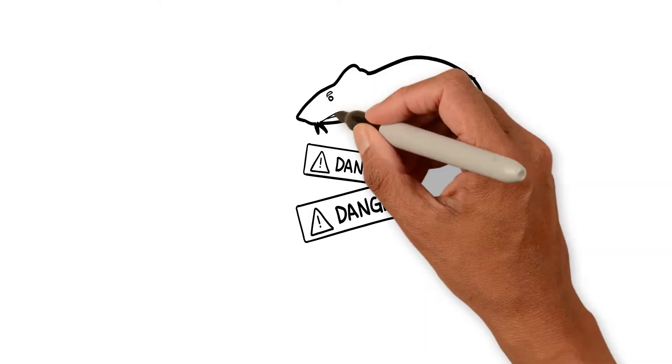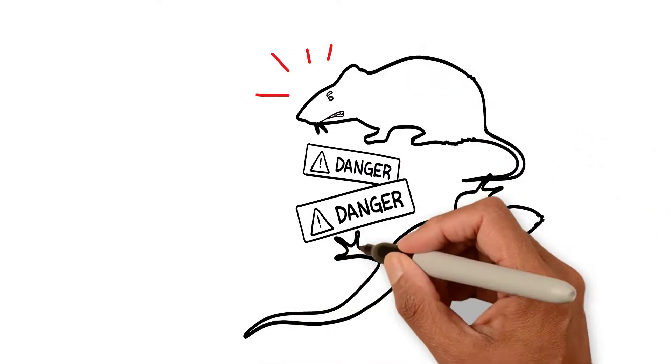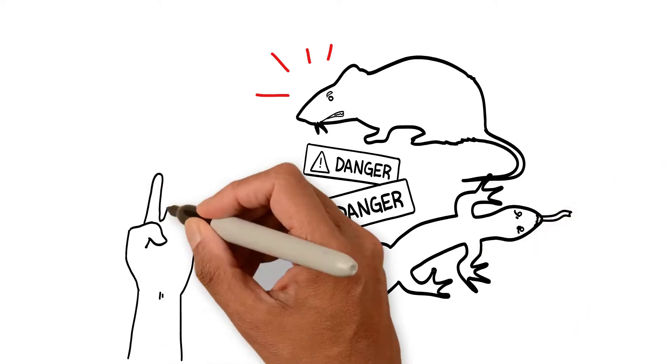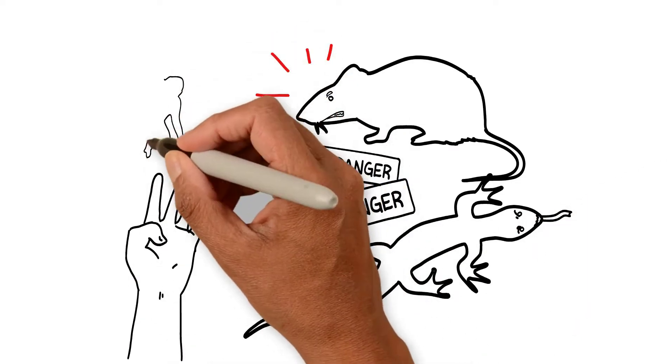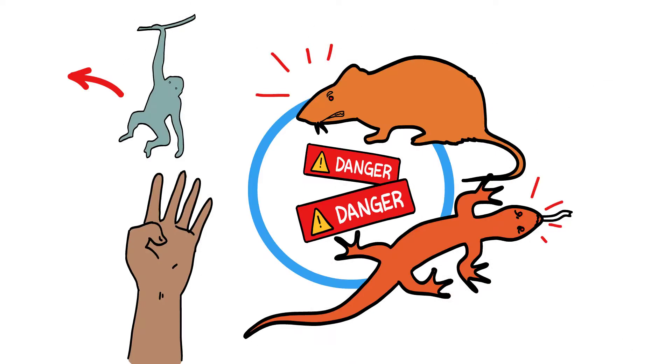These systems, the limbic system and the brain stem, the mouse and the lizard, take over to prepare you for the attack. And you flip your lid, the monkey part, the cortex, loses its connection.